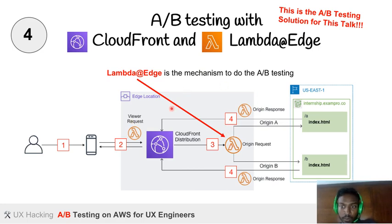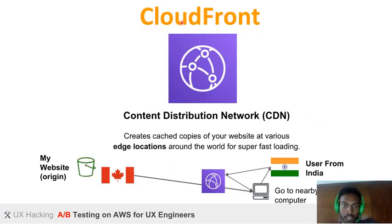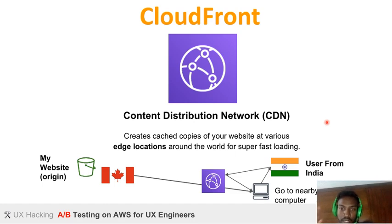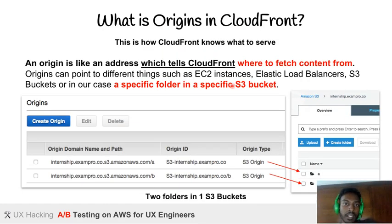We use four Lambda@Edge functions for different purposes, which I'll walk you through. CloudFront is a content distribution network — it creates cached copies of your website at various edge locations around the world for super-fast loading. For example, our website is in Canada, and if someone is accessing it from India, it loads from a nearby edge location instead of all the way from Canada.